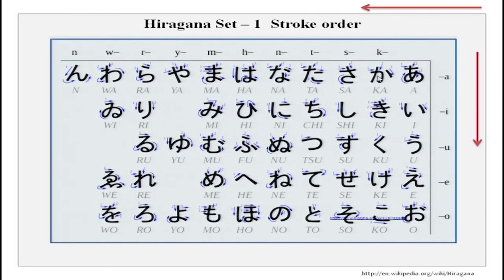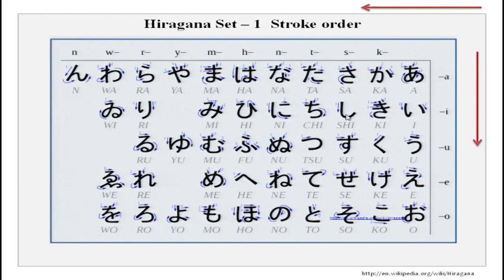For the k series, joining k with the vowels makes ka, ki, ku, ke, ko. In a similar manner for the s series: sa, shi, su, se, so. You will notice that this is a little different — the sound is not 'see' but 'shi'. This is an exception, please keep that in mind.